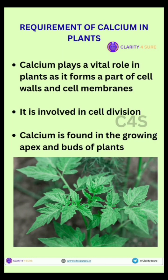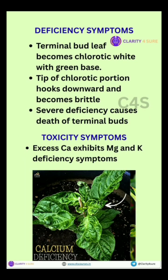Now let us discuss deficiency and toxicity symptoms. The terminal bud leaf becomes chlorotic — white with a green base — and the tip of the chlorotic portion hooks downwards. Severe deficiency causes death of terminal buds. The toxicity symptom of calcium is that it exhibits magnesium and potassium deficiency symptoms.